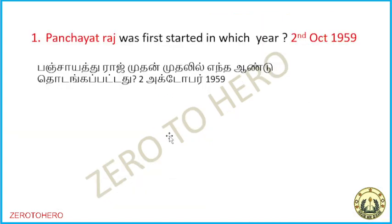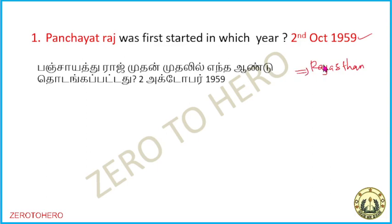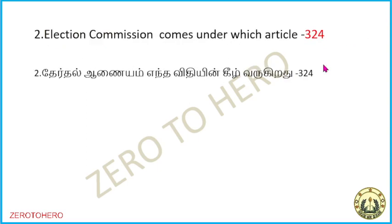First question: Panchayat Raj was first started in which year? It was 2nd October 1959. We started in Rajasthan. The next election comes under which articles?